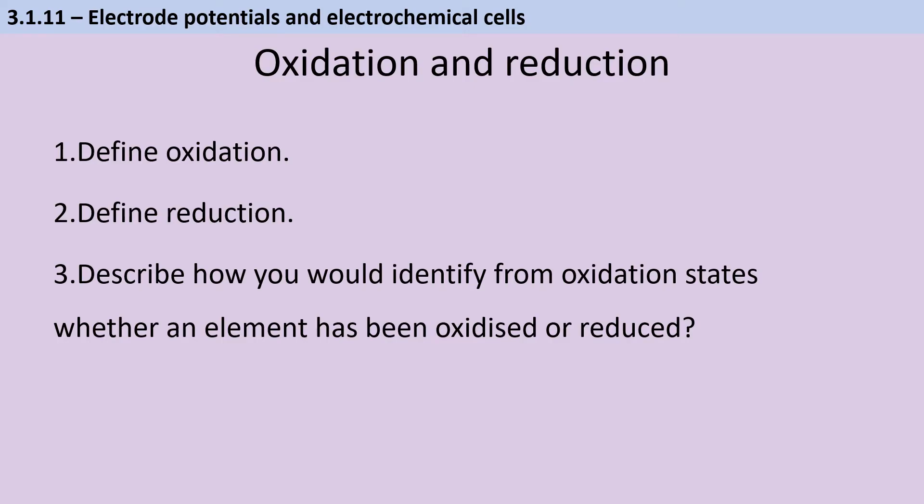This first bit is a little bit of AS recap. Oxidation is the loss of electrons and reduction is the gain of electrons. We can use oxidation states because if they become less positive, that tells us that a species has been reduced, and if they become more positive, that tells us that a species has been oxidized.